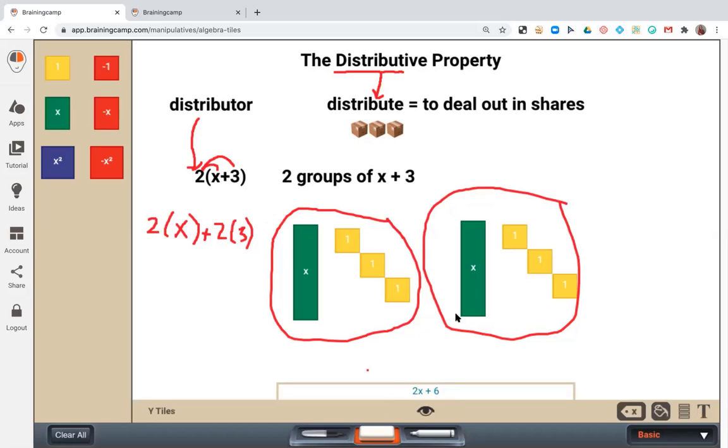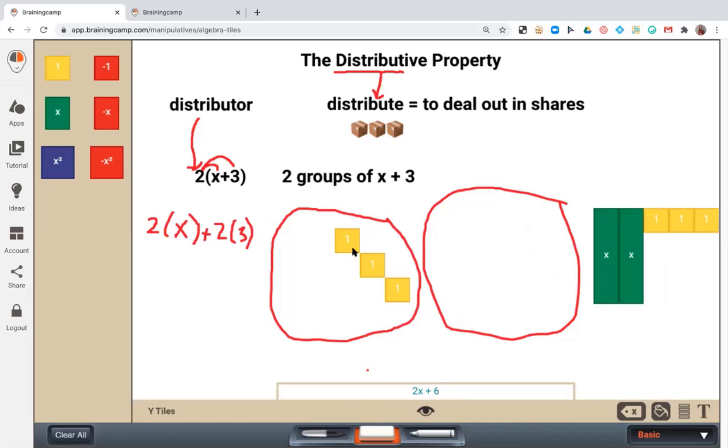And then we can actually rearrange this to where we can see how much do we have all together? Well, we have two x's. And if I put this in a pattern, I can see it a little bit better without counting. I have 2x and I have positive 6. So my simplified algebraic expression is 2x plus 6.